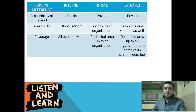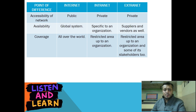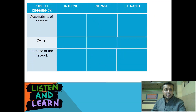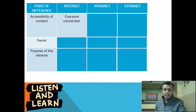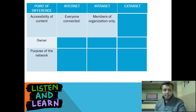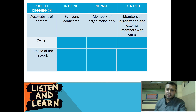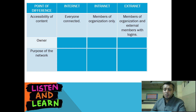Extranet is restricted to the area of the organization as well as some of its stakeholders — suppliers and vendors. Regarding accessibility of content: on the internet, everybody who is connected can access the content. In intranet, only the members of the organization can have access. Whereas in extranet, members of the organization along with external members like suppliers and vendors having login IDs and passwords can access it. The owner of internet is nobody.